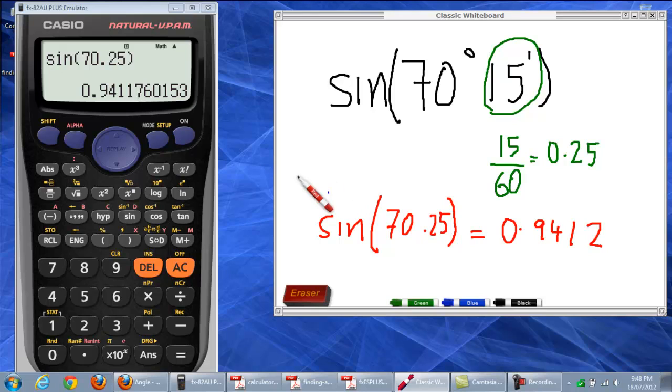But what about if we did the shortcut? Well, let's have a look at the shortcut. So, we go sine 70 degrees and 15 minutes. Close it. Now, when we do this, we should get that. So, let's have a look. And, yep, that's what we got. That's correct.